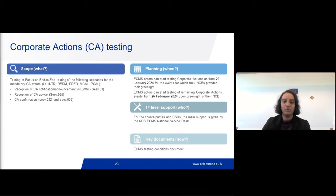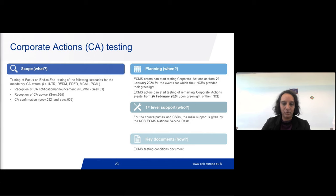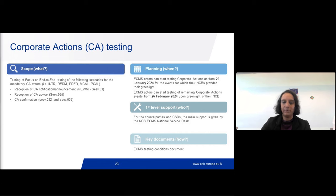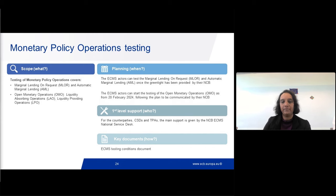The remaining corporate action functional domain is currently planned to be opened on the 26th of February. Testing is still ongoing — we want to stabilize it and then open it to the community. For all domains, the details, restrictions, any open or known issues — all this information is in the Testing Conditions document. We also advise you to align with your NCB counterpart to get the green light before you start testing in this functional area.